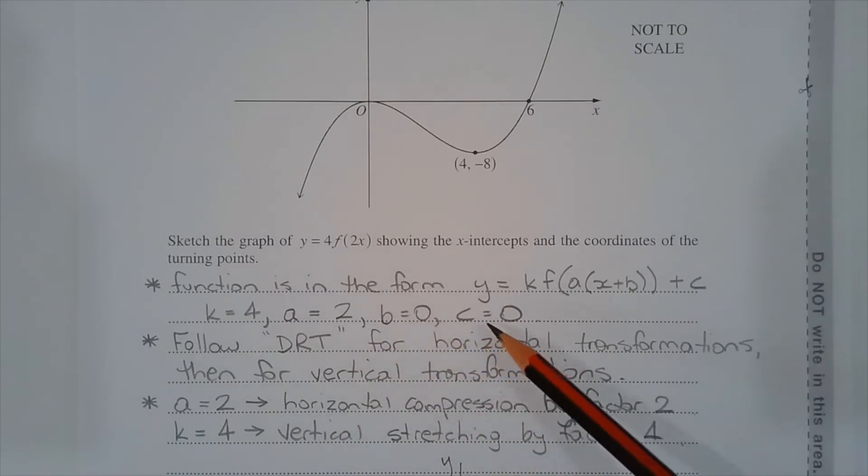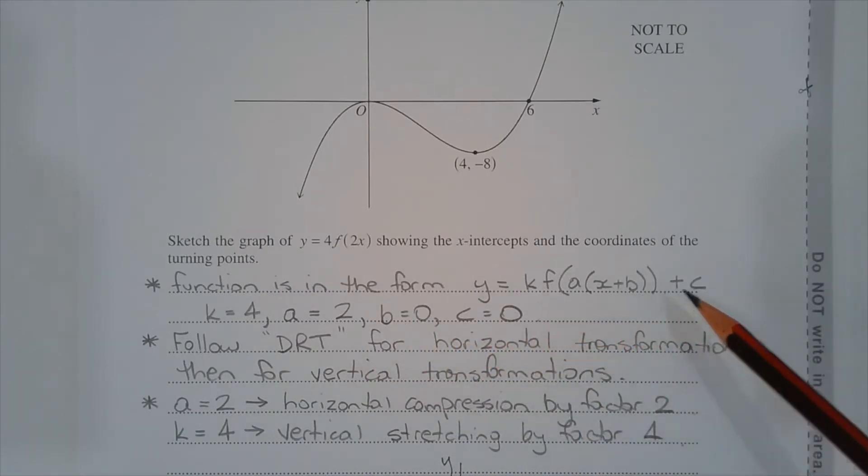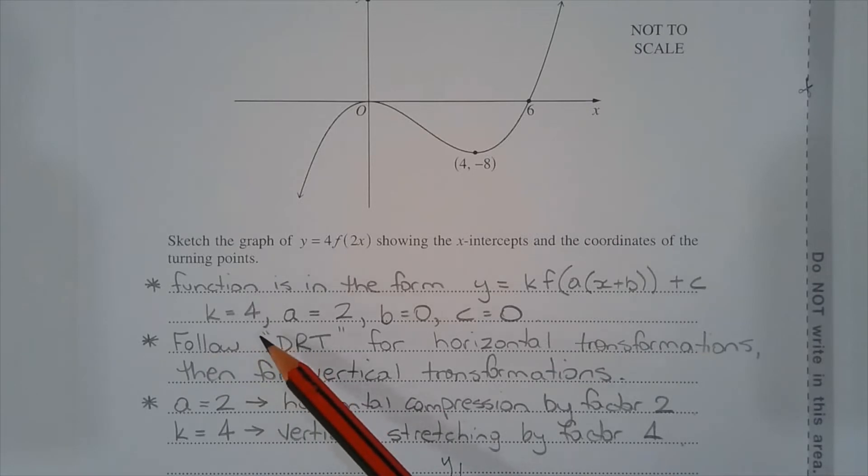The function is in the form y equals k multiplied by f of a times x plus b plus c, with k equals 4, a equals 2, b equals 0, and c equals 0.